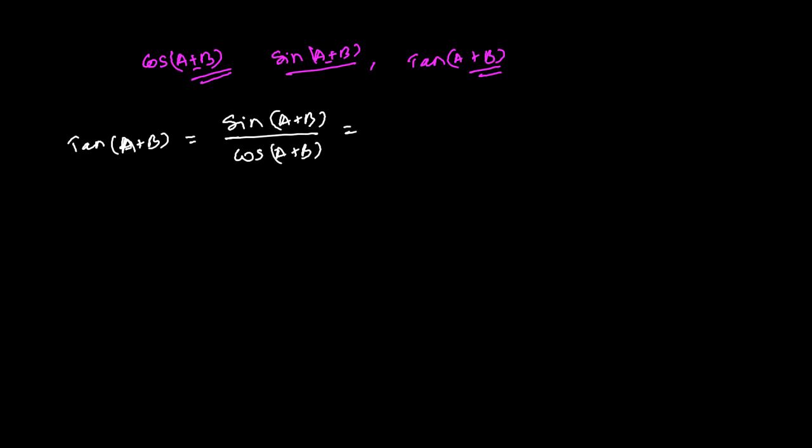And the sine of A plus B formula is sine A cos B plus sine B cos A. And the formula for the cosine of A plus B is cos A cos B minus sine A times sine B.